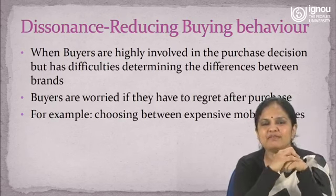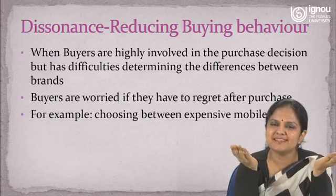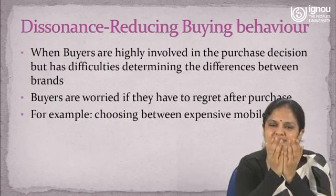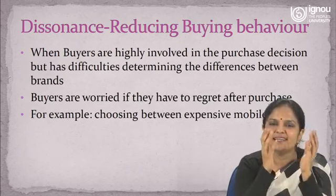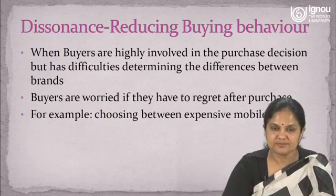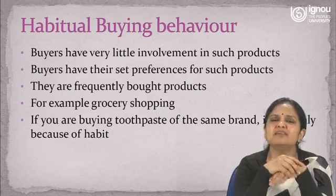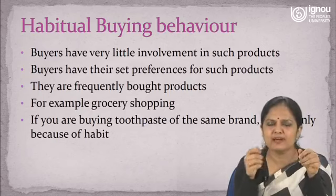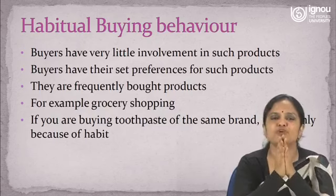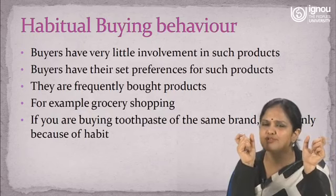In dissonance-reducing buying behavior, the commodities are expensive so you are going to make a heavy investment, but the alternatives in the market are so close to each other that you find it difficult to decide which to choose. For example, choosing between expensive mobile phones where companies offer the same quality, appearance, services and apps — the competitive products are so close that you get confused and take even more time. The buyer is worried whether they will regret the purchase.